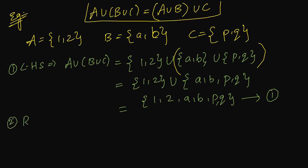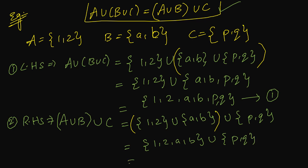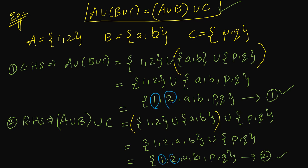Now let us consider the right hand side: A union B, then union with C. We need to take A union with B first: {1, 2} union {A, B} = {1, 2, A, B}. Then we perform union with C, which is {P, Q}. The union of all elements is {1, 2, A, B, P, Q}. This is equation 2. If you notice, equation 1 and equation 2 have exactly the same elements: 1, 2, A, B, P, Q. So these two sets are equal, which means LHS equals RHS. Hence, proved.